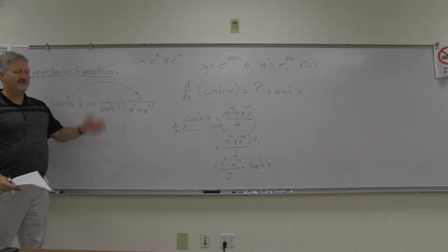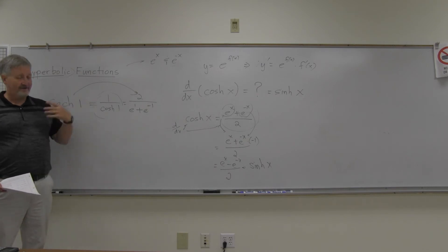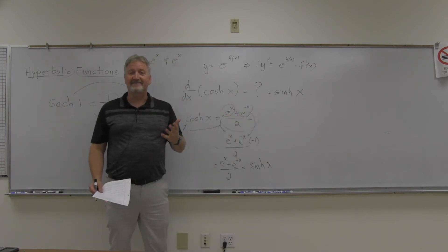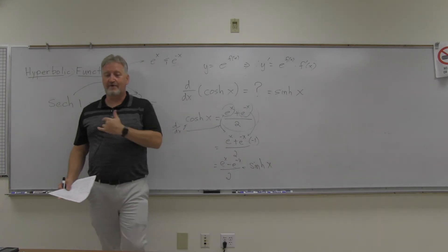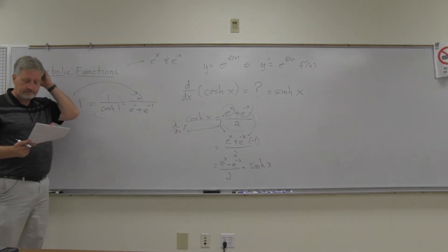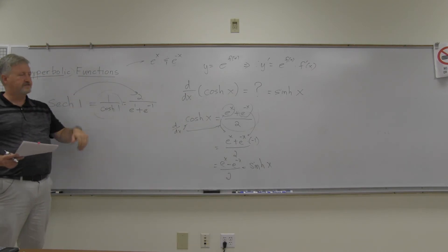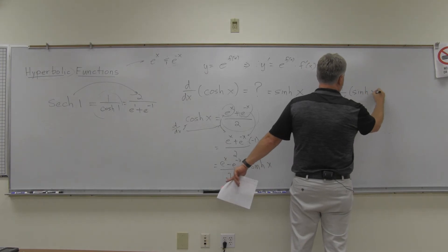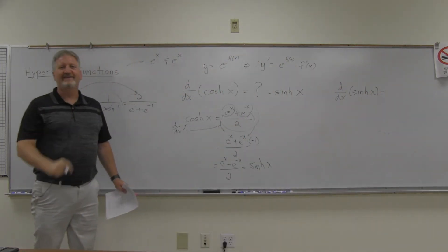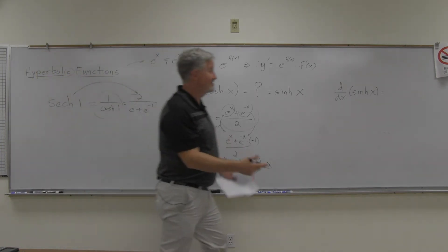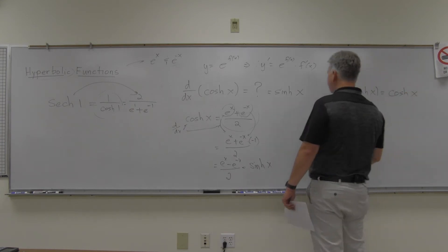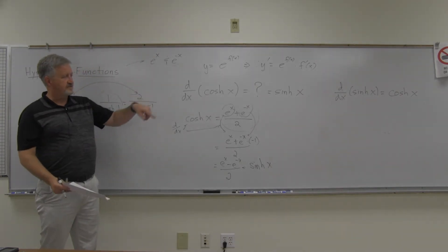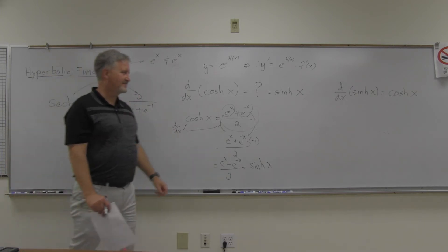Similarly, the derivative of sinh is cosh. Notably, neither derivative involves a negative sign — both are positive, which is nicer than the trig functions where derivative of cosine is negative sine. So: d/dx[cosh] = sinh, and d/dx[sinh] = cosh.